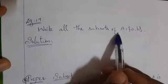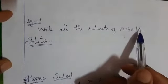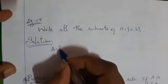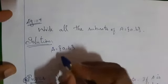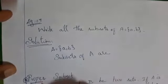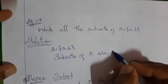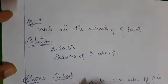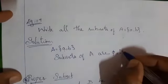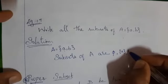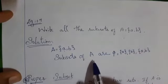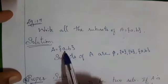Write all the subsets of capital A equal to {a, b}. First, write the set capital A equal to {a, b}. The subsets of A are: first write the empty set. For all sets, one of the subsets is empty. Therefore: empty, then take the first element {a}, then inside the set write {b}, then the set {a, b}. So the subsets of A are: empty, {a}, {b}, and {a, b}.